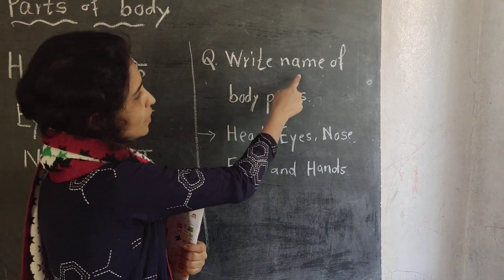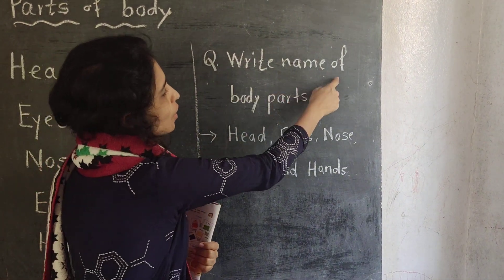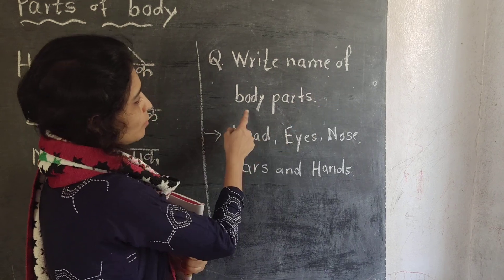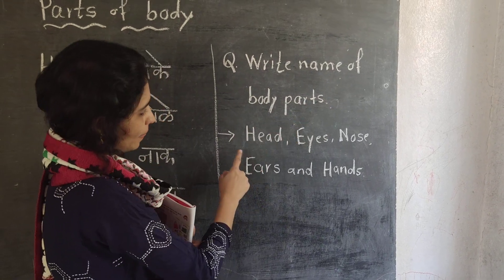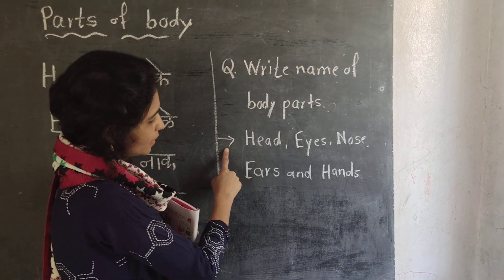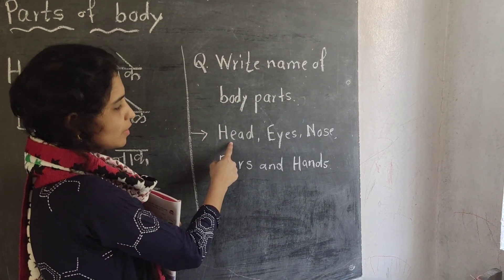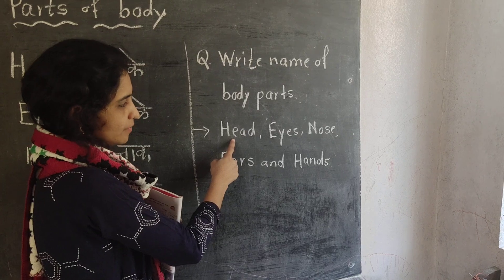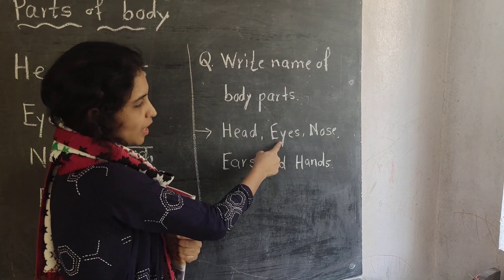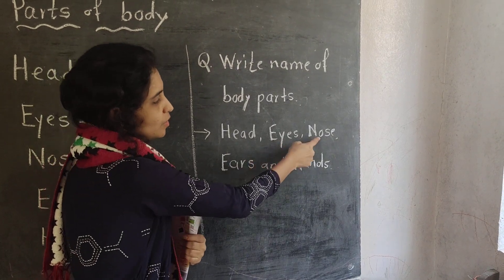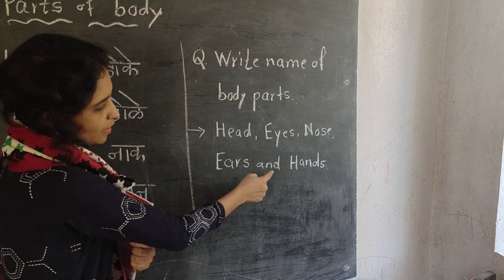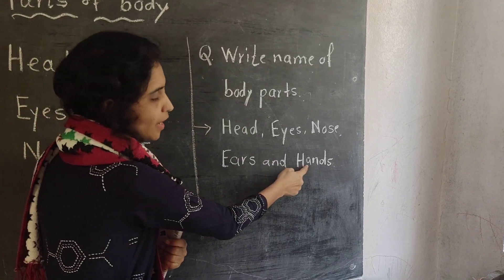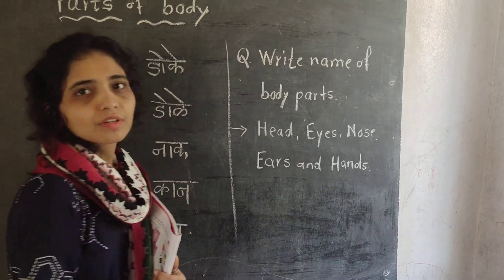Right — name the body parts. Answer: head, eyes, nose, ears, and hands.